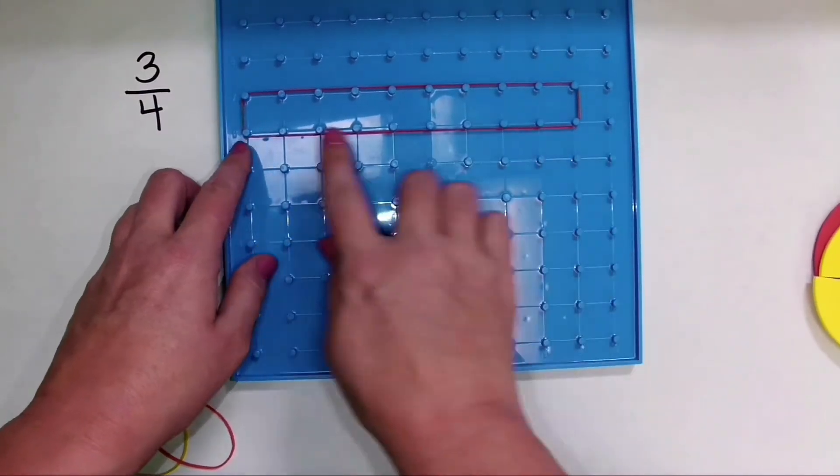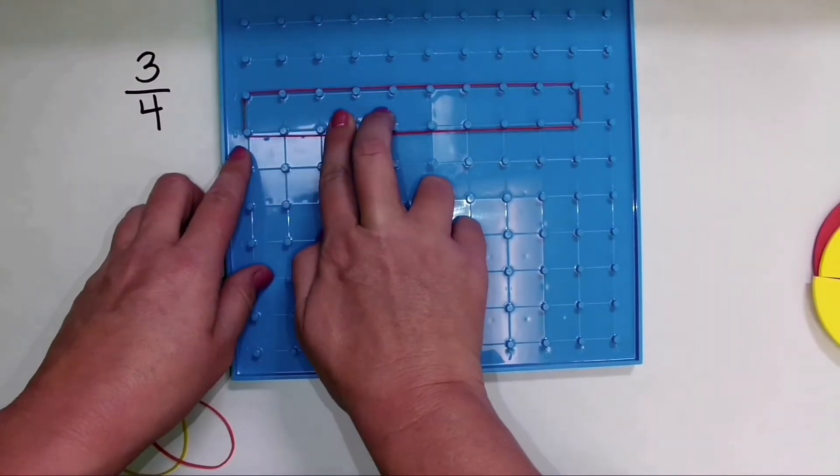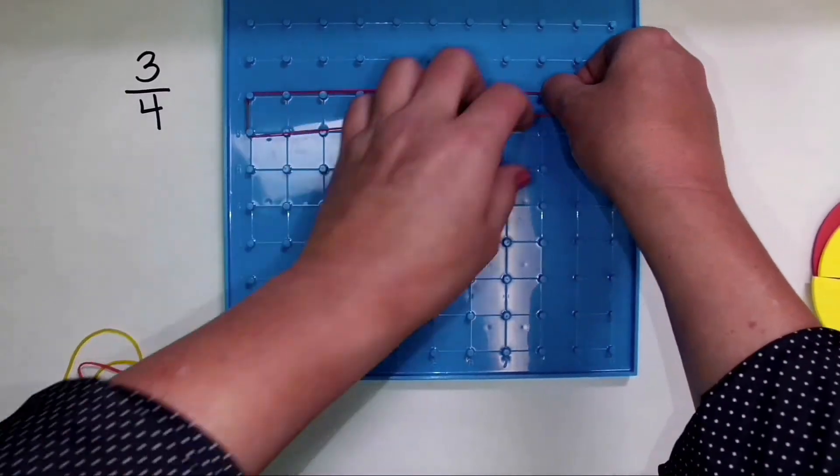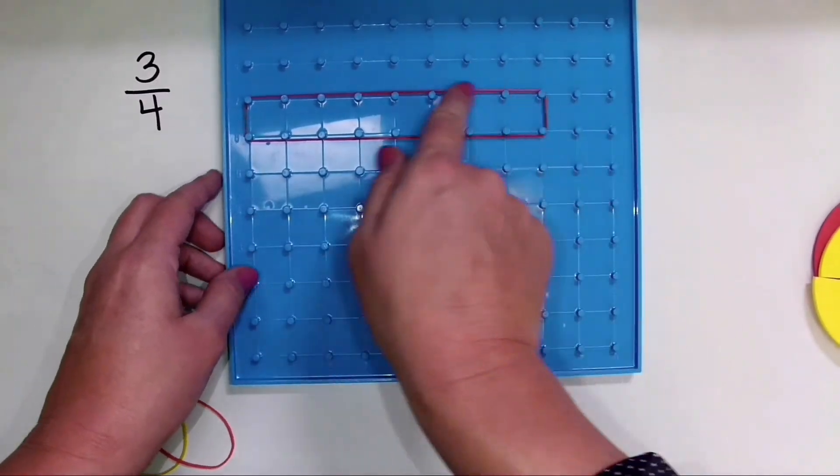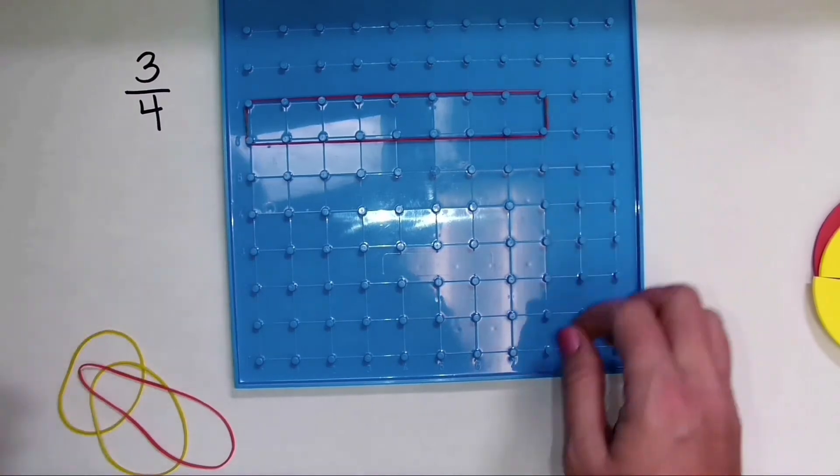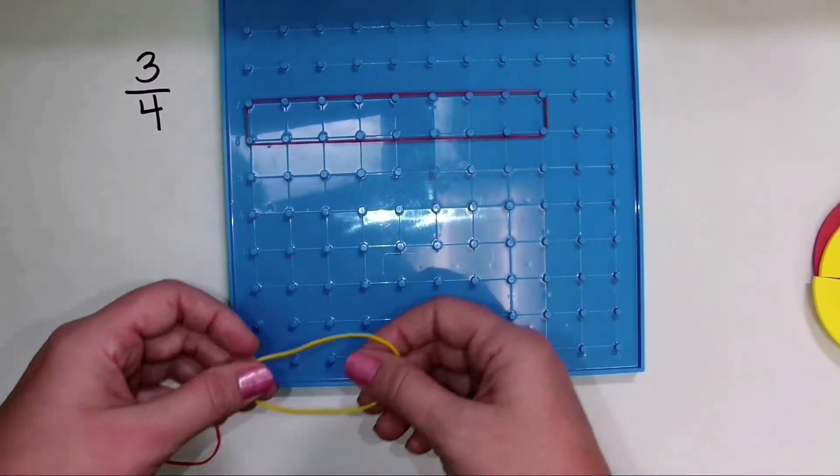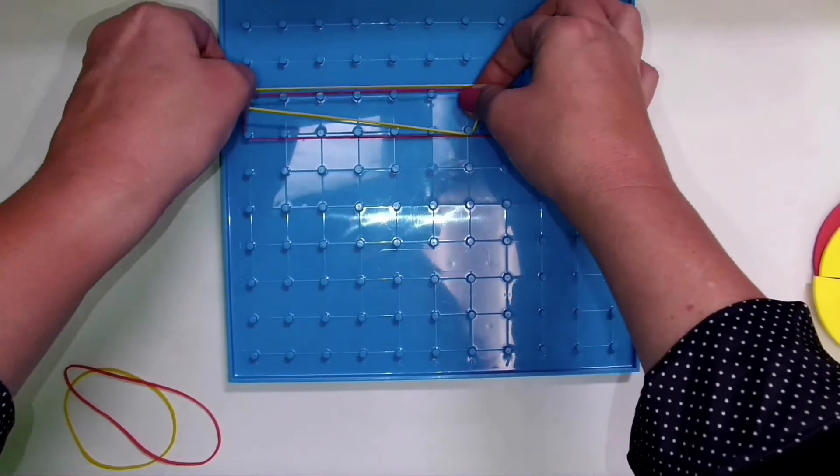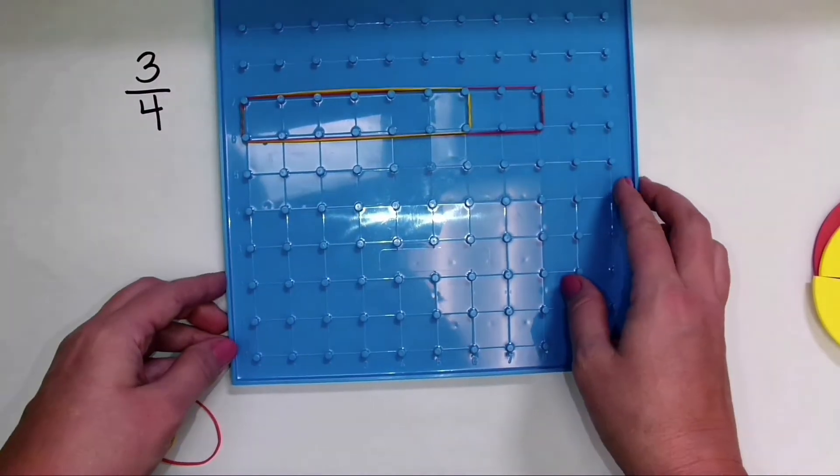And I can be pretty simple. And I could say, well, here is an area with one, two, three, four equal parts. Oops, made a little bit of a mistake there. Now that represents the denominator, or the whole, but I could use a different colored rubber band to show the numerator, or to show three of the four parts.